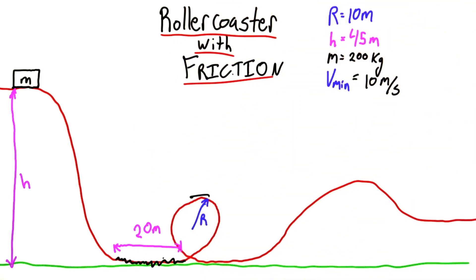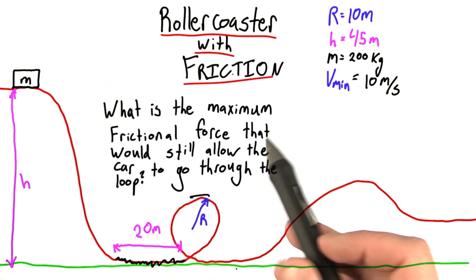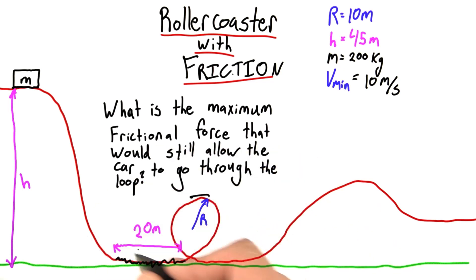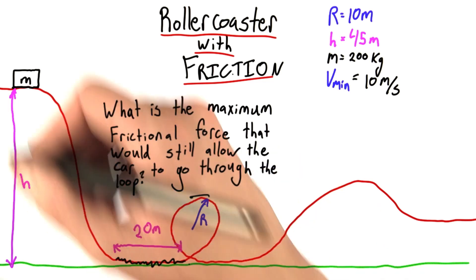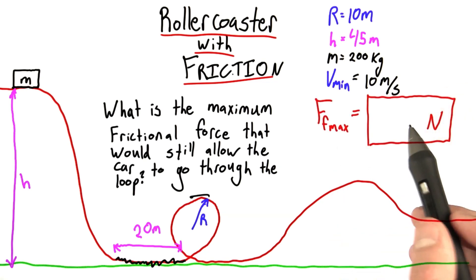Clearly, this is probably not a good thing. Just how much friction could there be to still allow the cart to make it through this loop? So the question is, what's the maximum frictional force? And remember, there's only friction over these 20 meters. The rest of the track, we're assuming, is still nice and smooth. So what's the maximum force that would still allow the car to make it through this loop? Enter your answer here in Newtons.